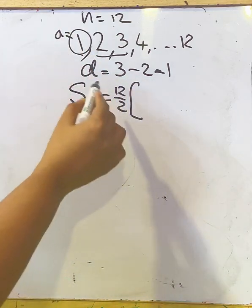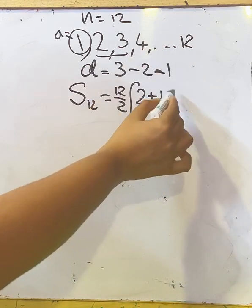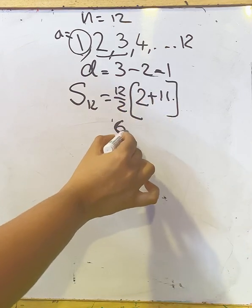a = 1, the first term is 1. 2a means 2 × 1 = 2, plus (12-1) = 11, and d = 1, so 11 × 1 = 11. 12/2 = 6, 6 × 13 = 78.